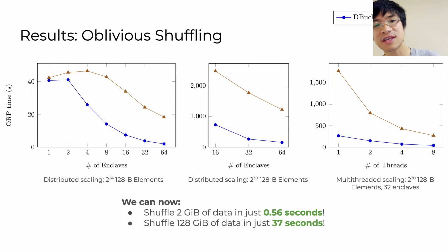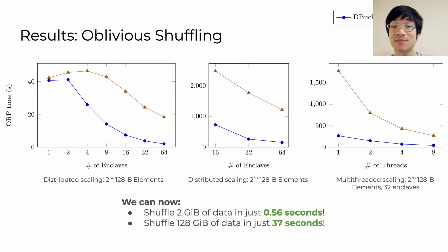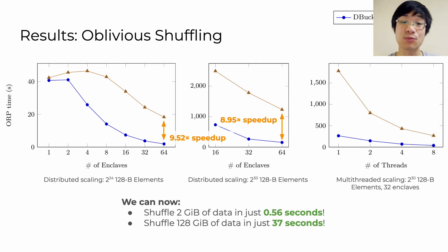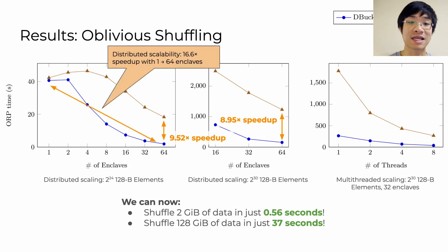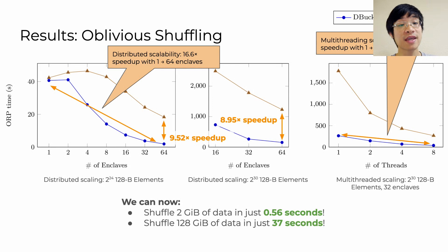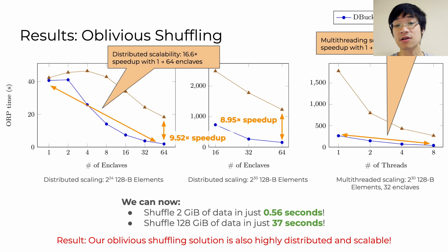The story is pretty much the same with oblivious shuffling. We actually outperform ORShuffle even in the single-enclave case, which probably owes to the memory and assembly optimizations we made. We see a nearly 10x speedup over ORShuffle with 64 enclaves, and nearly 9x in the same 128GB dataset. We achieve a 16x speedup when increasing from 1 to 64 enclaves, and a 6.6x speedup when increasing from 1 thread to 8. Since shuffling is faster than sorting for us, we can shuffle 2GB of data in a little over half a second, and 128GB of data in a little over half a minute. So our oblivious shuffling solution is also highly distributed and highly scalable.